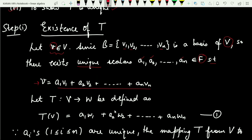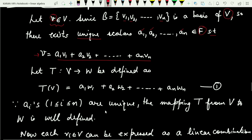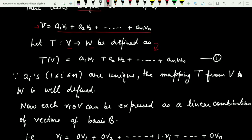Now let T be a map defined from V to W, and I have defined this map as T(v) = a1*w1 + a2*w2 + ... + an*wn, marked as equation (1). Now because these scalars are unique, the above map is well defined.